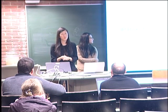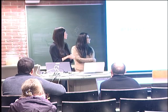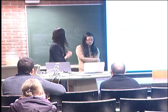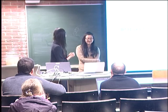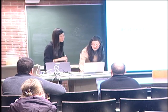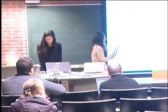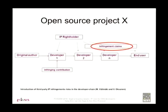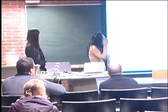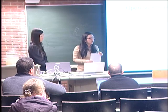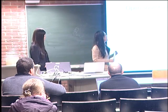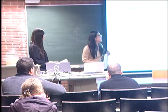Before we get to the protection mechanisms, we will have Sumi talking about copyright. So I will explain the problem shortly. You have an open source project X and developer 1, though acting in good faith, has an infringing contribution in the developer's chain. The piece of code that he uses infringes the IP rights of a third party who is not directly involved in the project and didn't give permission to use this code.